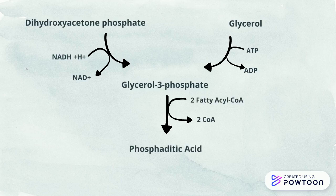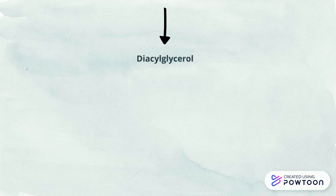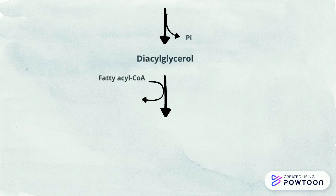This step produces 2 CoA as the byproduct. Next, phosphatidic acid is converted into diacylglycerol with phosphate as the byproduct. With the addition of the third fatty acyl-CoA, diacylglycerol is converted into the final product, which is triacylglycerol. The byproduct of this final step is CoA.